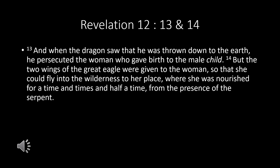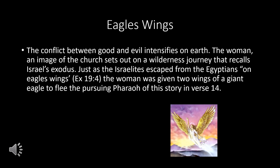Revelation 12:13-14: 'And when the dragon saw that he was thrown down to the earth, he persecuted the woman who gave birth to the male child. But the two wings of a great eagle were given to the woman, so that she could fly into the wilderness to her place, where she was nourished for a time and times and half a time from the presence of the serpent.' The conflict between good and evil intensifies on earth. The woman — an image of the church — sets out on a wilderness journey that recalls Israel's exodus. Just as the Israelites escaped from the Egyptians on eagle's wings (Exodus 19:4), the woman was given two wings of a giant eagle to flee the pursuing Pharaoh of this story.